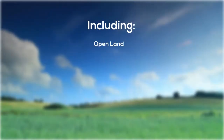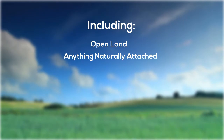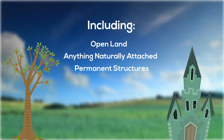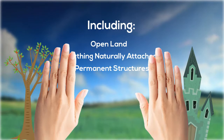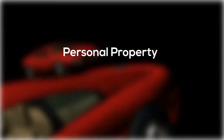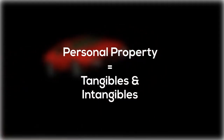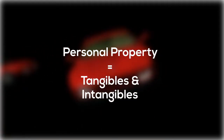This includes open land, anything naturally attached to the land like trees, and permanent structures attached to the land. On the other hand, personal property is anything that isn't real property. Most personal property falls into two categories: tangibles and intangibles.